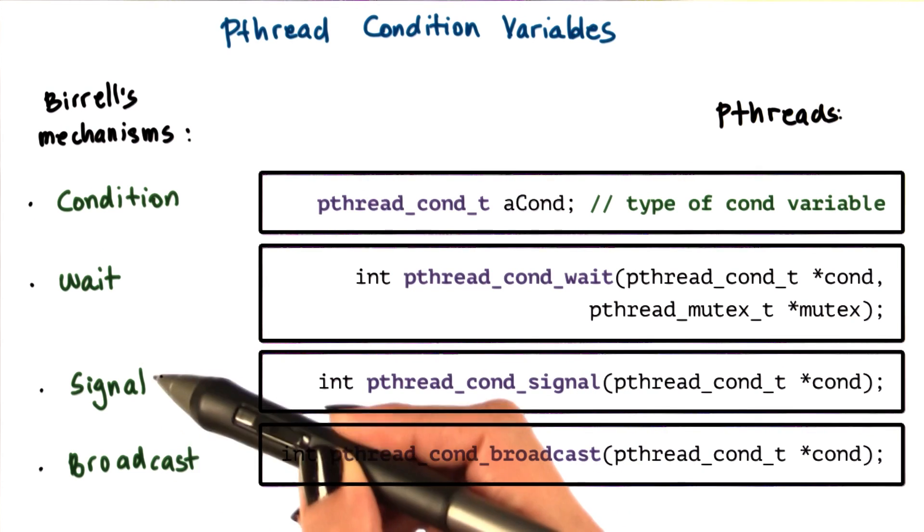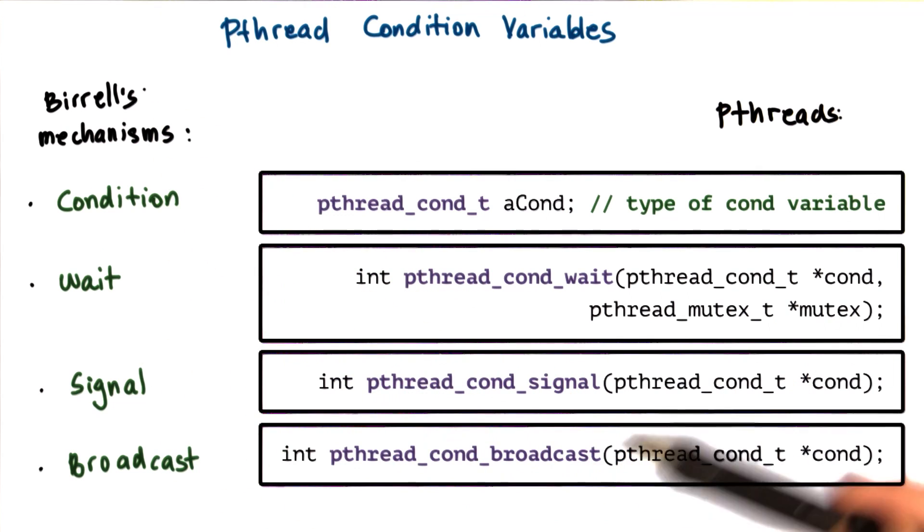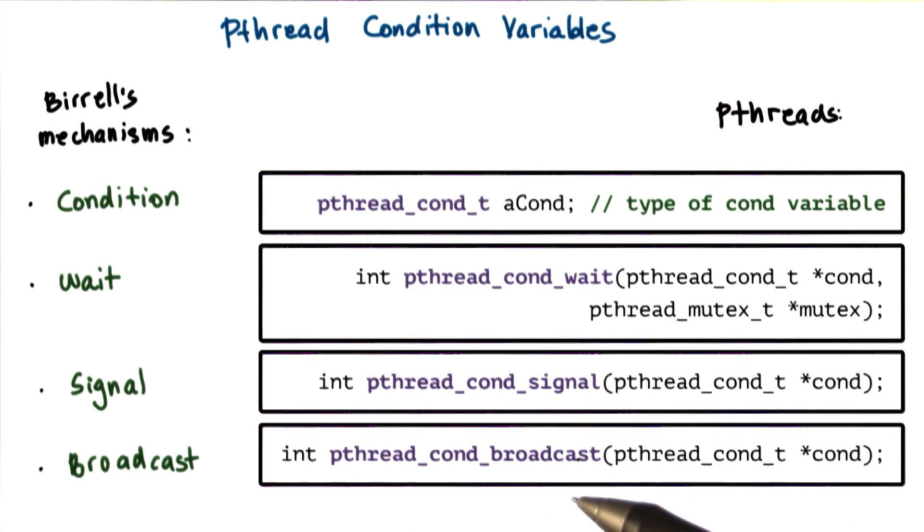Identical to the signal and broadcast mechanisms in Beryl, pthreads has pthread_cond_signal and pthread_cond_broadcast that we can use to either notify one thread that's waiting on a condition variable using the signal operation, or to notify all threads that are waiting on a condition variable using the pthread_cond_broadcast operation.